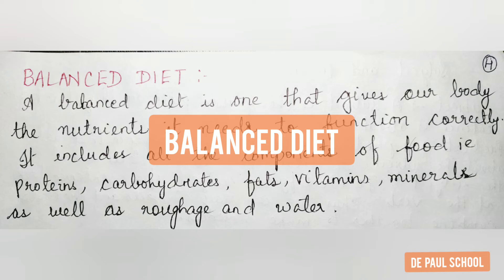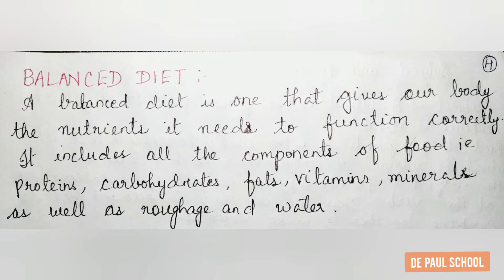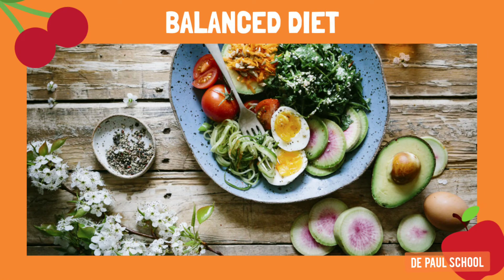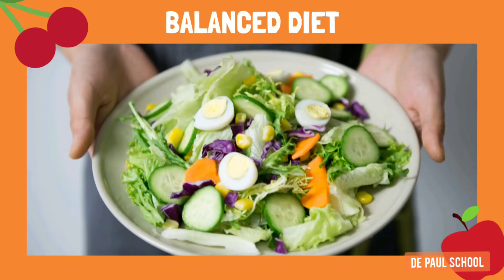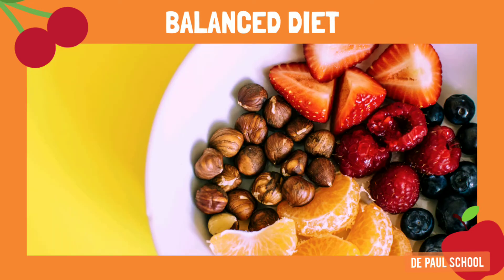Now let us study about the balanced diet. A diet containing right quantities of nutrients is called a balanced diet. A balanced diet gives our body the nutrients it needs to function correctly. It includes all the components of food: proteins, carbohydrates, fats, vitamins, minerals, as well as roughage and water. We need a large amount of carbohydrates, less proteins, a small amount of fats, and lots of fruits and vegetables for the proper functioning of the body.